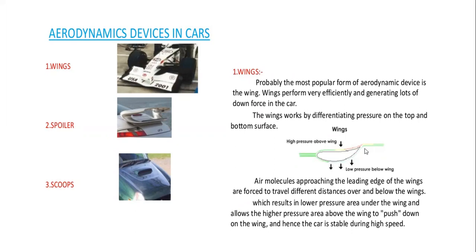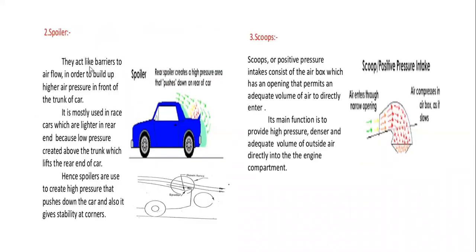Next is the spoiler. The spoiler is another method for providing aerodynamic stability, provided at the back portion of the automobile vehicle. Spoilers act like a barrier to airflow in order to build up high pressure in front of the truck or car. They are mostly used in rear cars which are lighter at the rear end, because low pressure created above the rear lifts it up. Spoilers create high pressure that pushes down the car and also provides stability at corners.